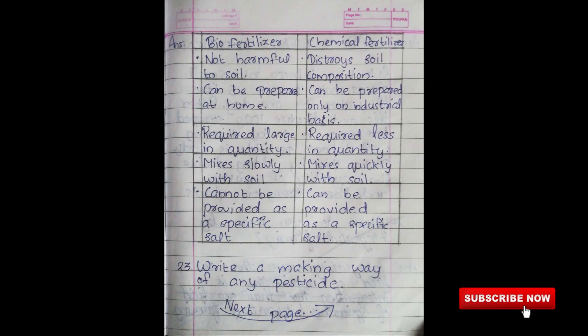Biofertilizer can be prepared at home. Chemical fertilizer can be prepared only in industrial facilities. Biofertilizer is required in large quantities. Chemical fertilizer requires less quantity. Biofertilizer mixes slowly with soil. Chemical fertilizer mixes quickly with soil. Biofertilizer cannot be provided as a specific salt. Chemical fertilizer can be provided as a specific salt.